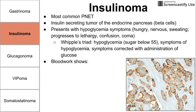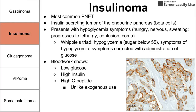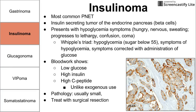Blood work for a person with insulinoma shows low glucose, high insulin, and high C-peptide. The high C-peptide is important because it allows you to rule out exogenous injection of insulin, which would present with low glucose, high insulin, and low C-peptide — so that last one is the differentiating factor. On pathology you usually see small cells, and you can treat insulinoma with surgical resection.